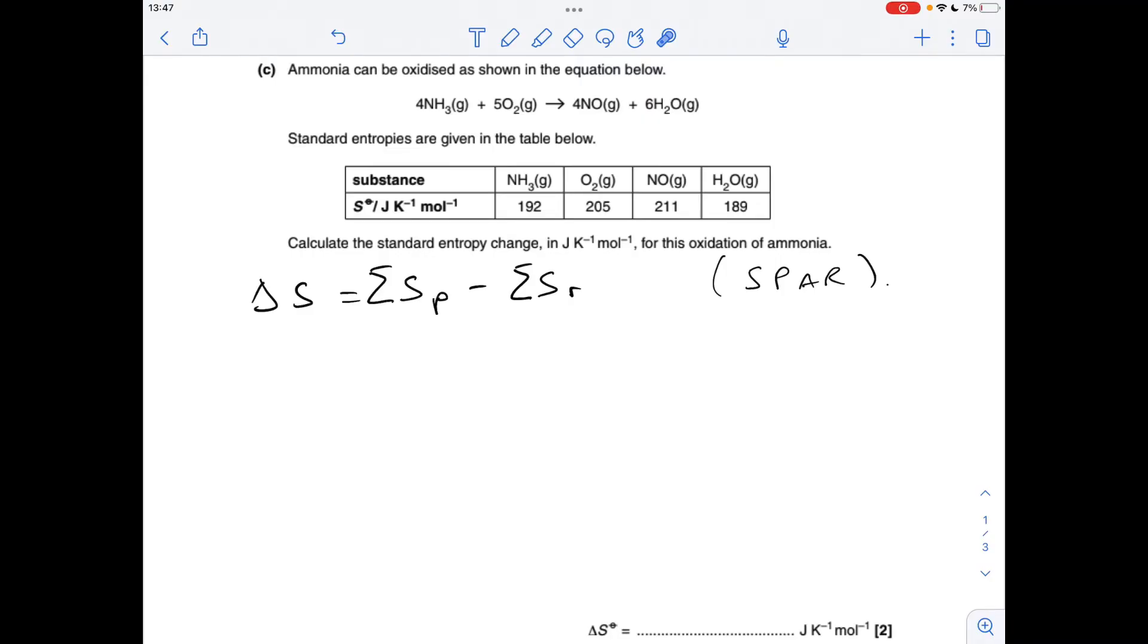Part C now, we've got to calculate the standard entropy change for this reaction here. So you can see I've written up the word spar there, that's just my way of remembering that it's the entropy of the products minus the entropy of the reactants. So we need to calculate the sum of the entropies of the products, these things here, and then subtract from that the sum of these. So there's all the numbers in there, and the answer comes out at 185.